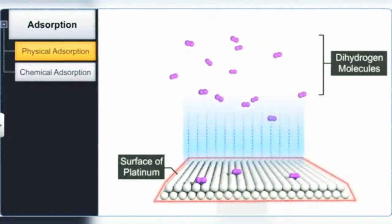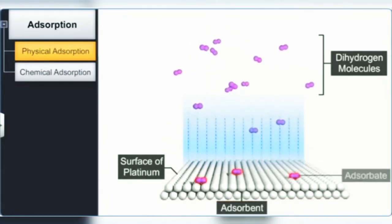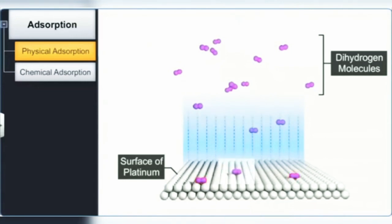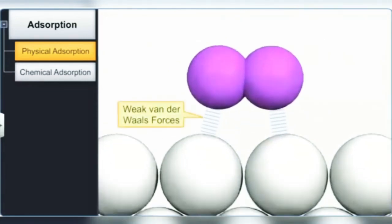Here, platinum is the adsorbent and dihydrogen molecules are the adsorbate. There is no chemical bond between adsorbent and the adsorbate.